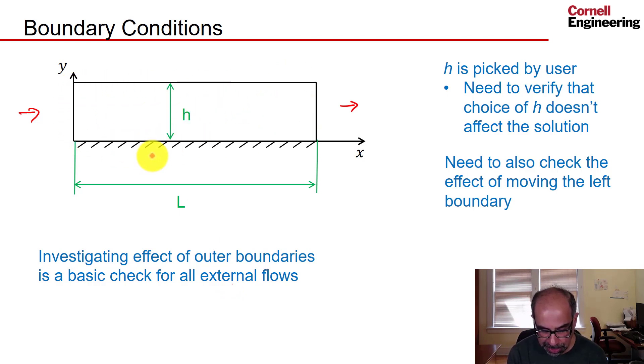So what are the boundary conditions at the edges of the domain? At the plate you have no slip: u equals zero, v equals zero. Here the flow is coming in, so u equals u infinity, the free stream condition, v equals zero. Where the flow is going out, typically you set the pressure, so we'll set pressure equal to P infinity.